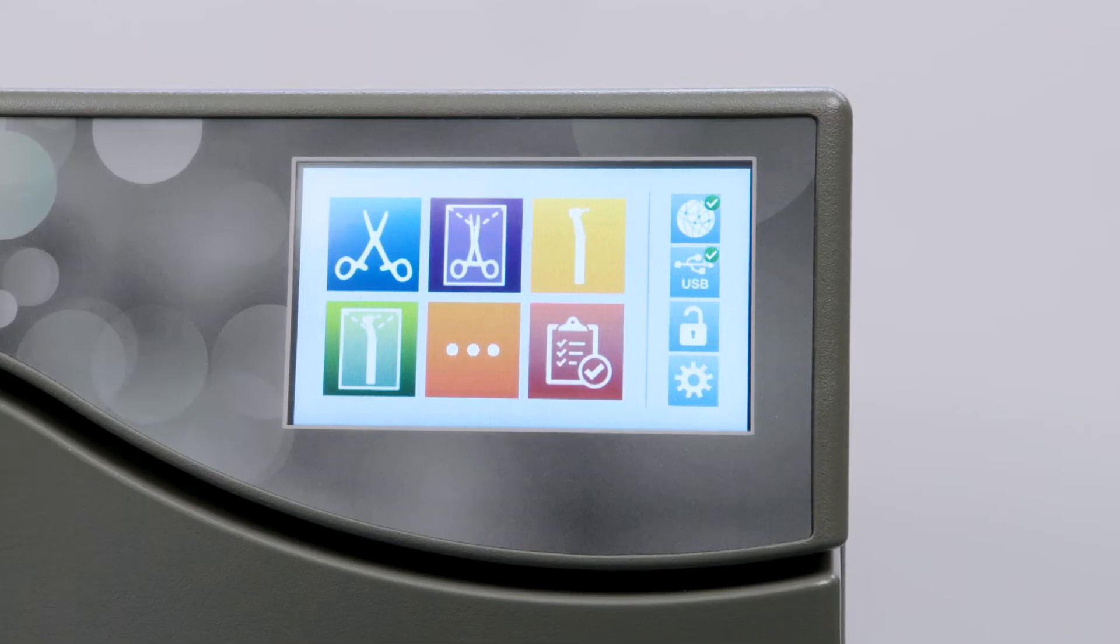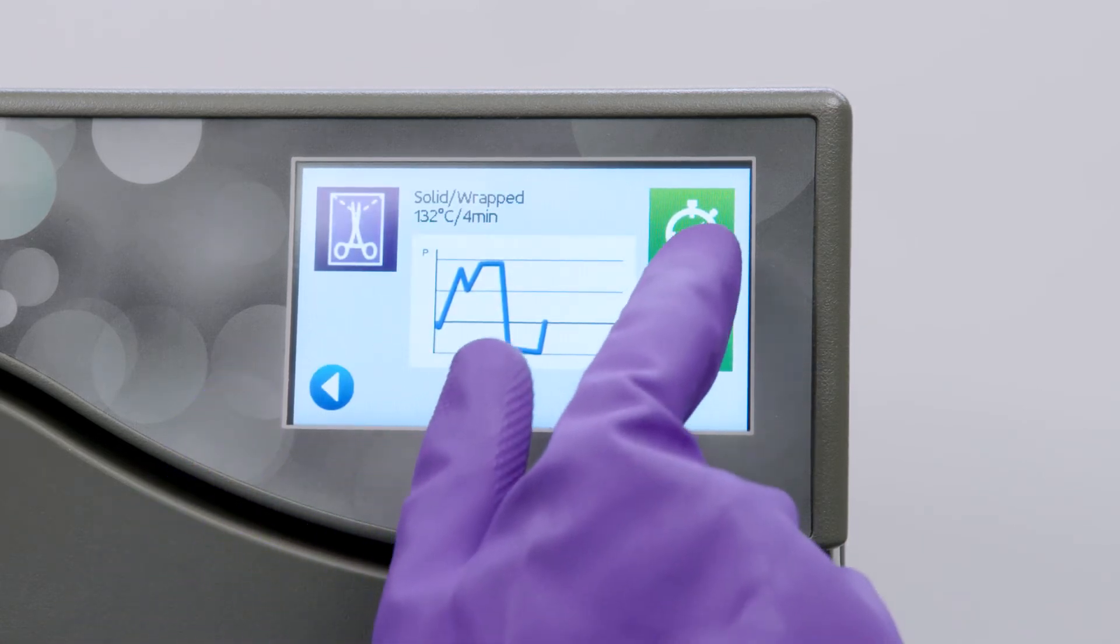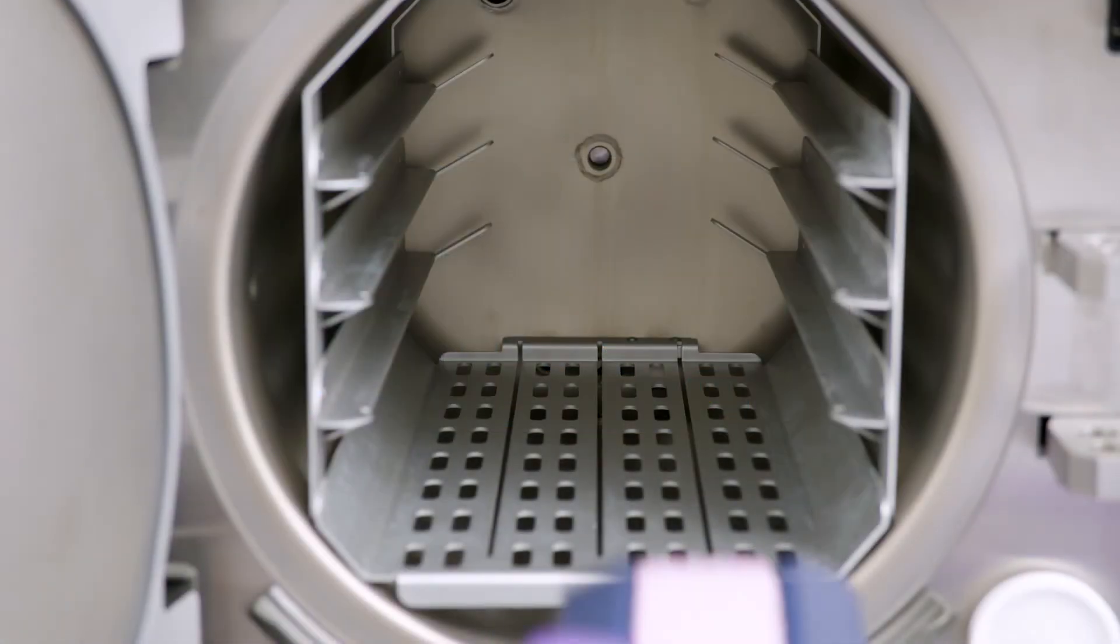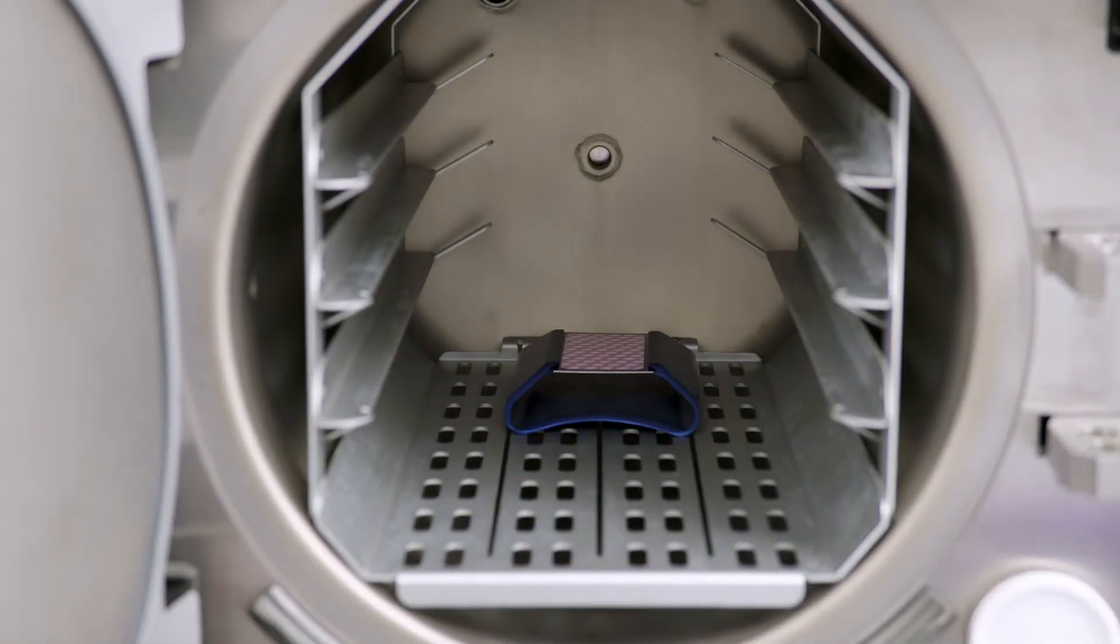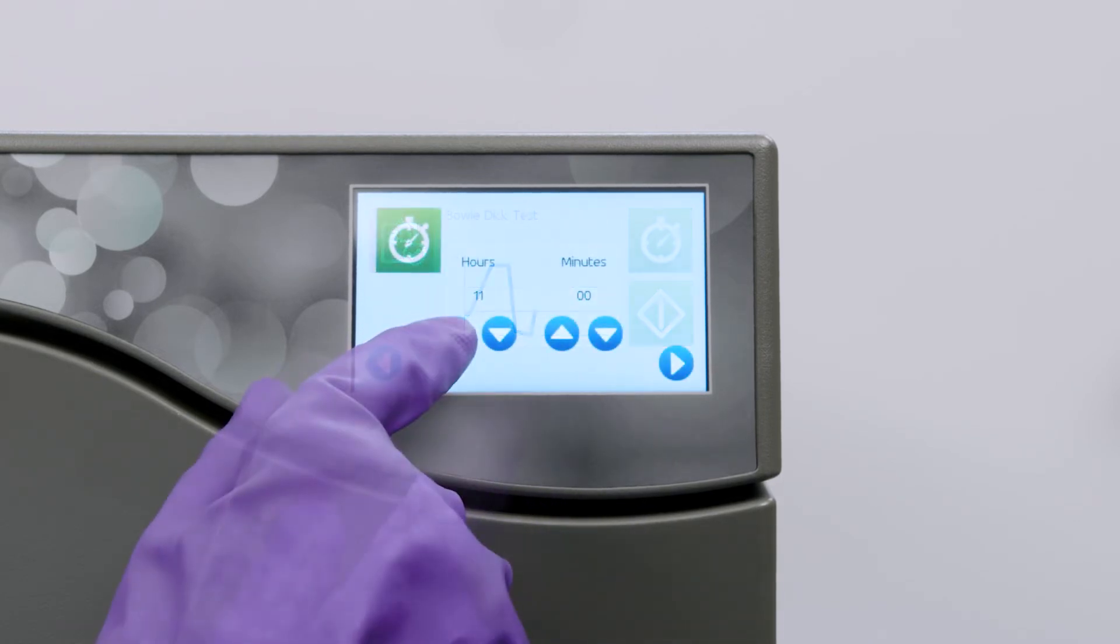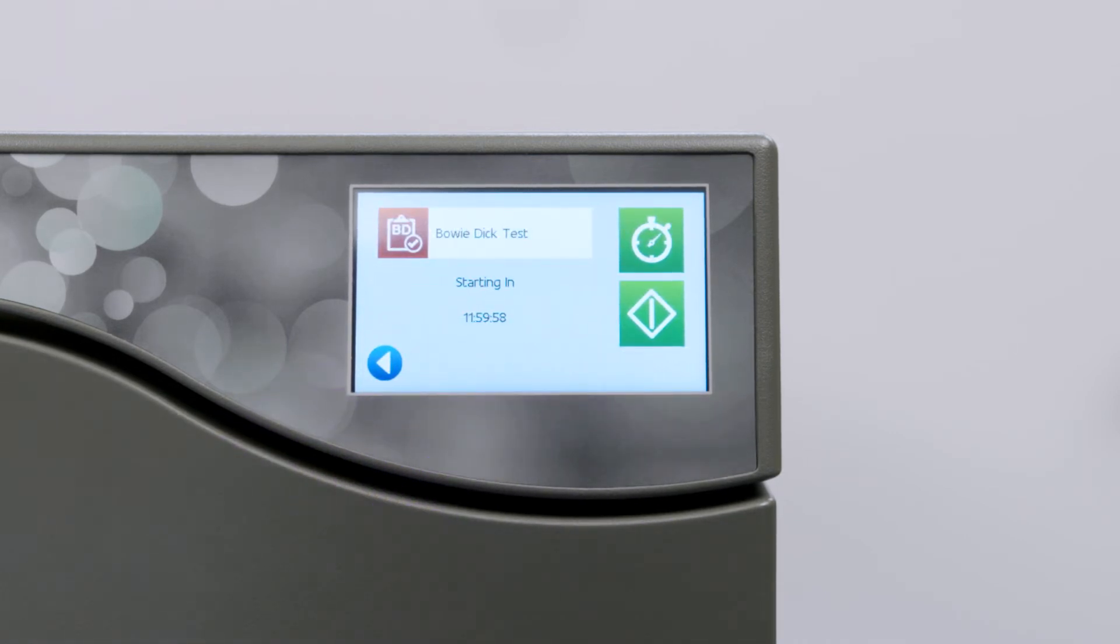If all the conditions of the pre-cycle screen are met, you will not see the pre-cycle screen. Instead, the unit will go directly to the start screen. From the start screen, you have two options. You can start the cycle immediately or select a delayed start, which allows you to set the cycle to start at a later time. The delayed start feature is ideal for offices that need to schedule a Bowie Dick test to run before the start of the day. Using this feature, you can load your Bowie Dick test and set the delayed start to begin prior to your office opening. This ensures your test cycle is complete and you can start running sterilization loads immediately.